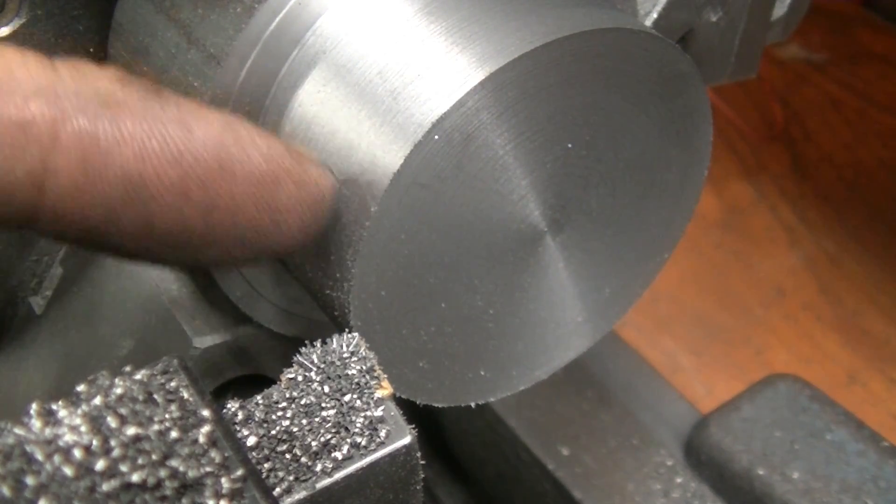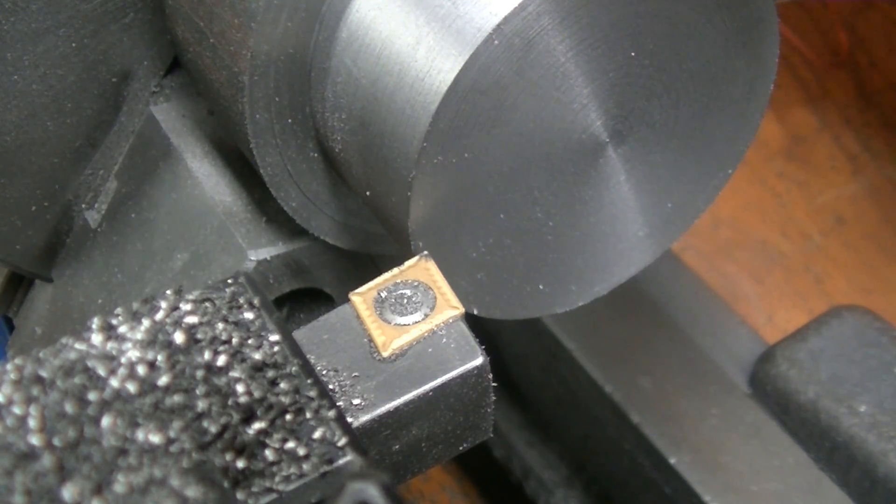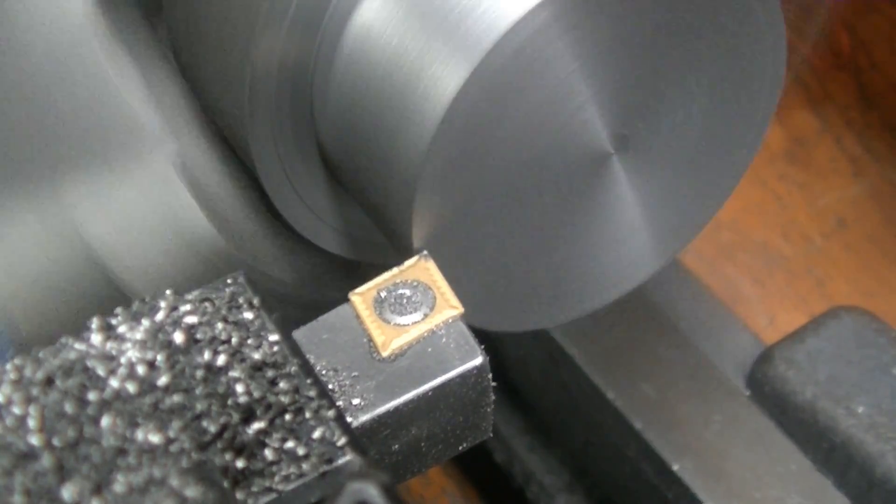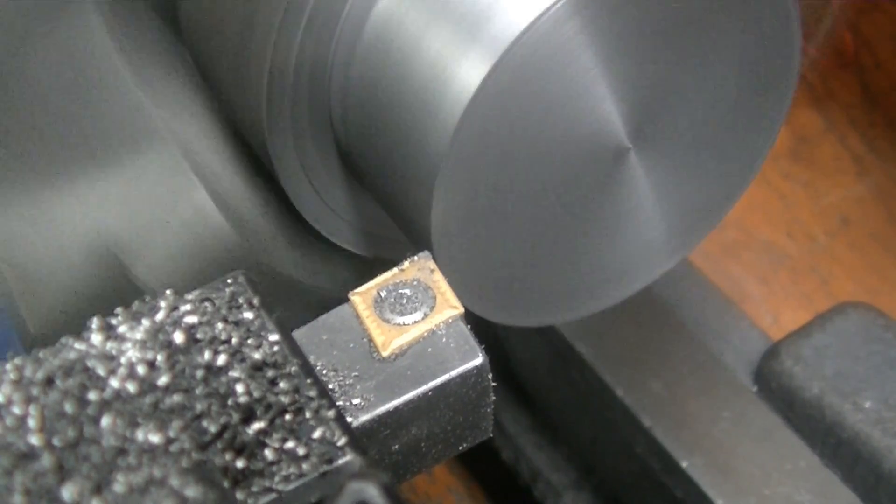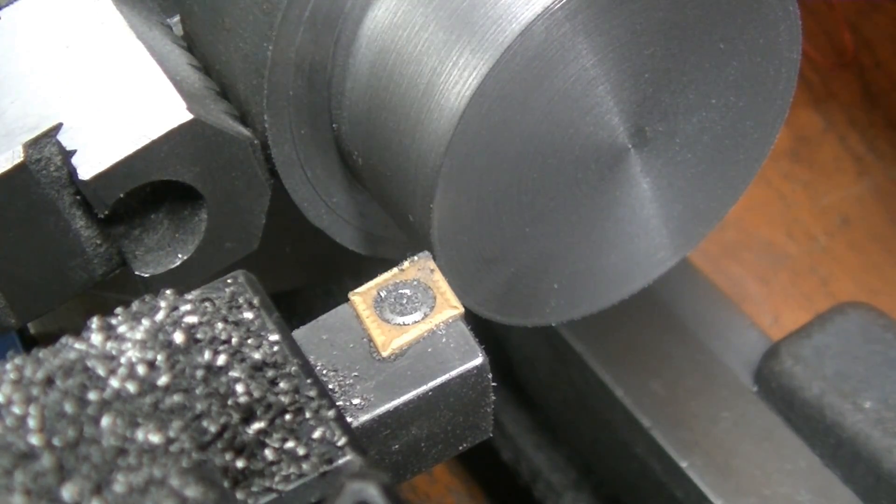Next we need to machine the step out. So we're going to touch that, zero the indicator, and we're going to go over a quarter of an inch.